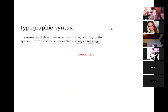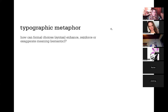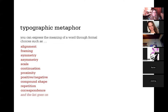Semantics. How can formal choices — syntax — enhance, reinforce, or exaggerate meaning or semantics? You can express the meaning of a word through formal choices such as alignment, framing, symmetry, asymmetry, scale, continuation, proximity, positive, negative, compound shape, repetition, correspondence, and the list goes on.